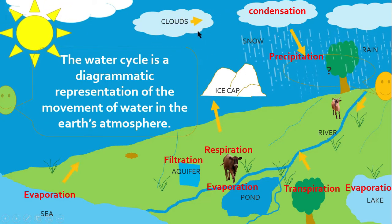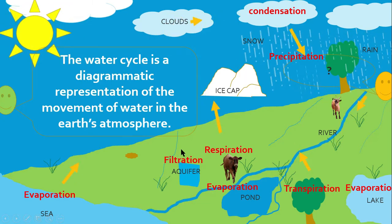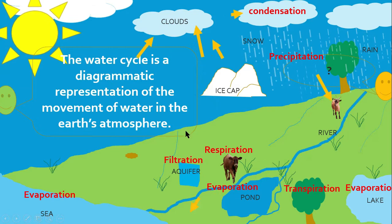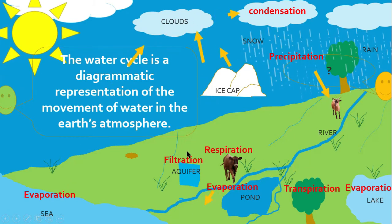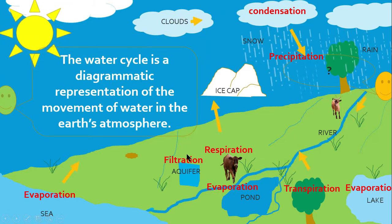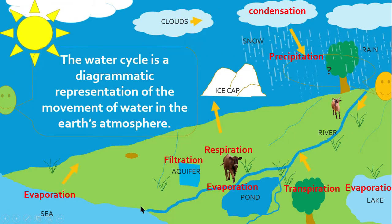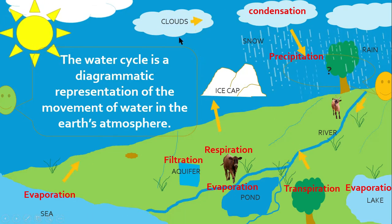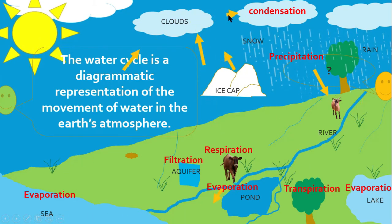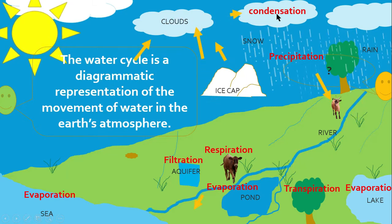Respiration — sending water back to the clouds. Filtration takes place as water seeps through layers of soil into the aquifer. Water runs off into the sea and is later evaporated to the clouds, and again condensation takes place.